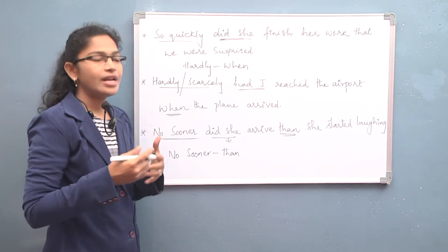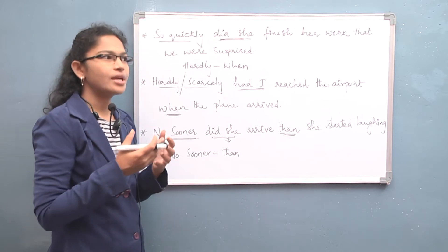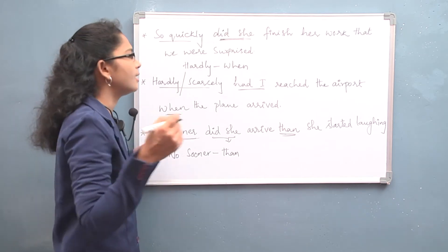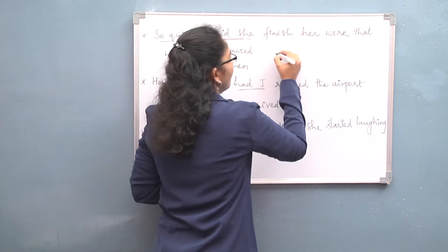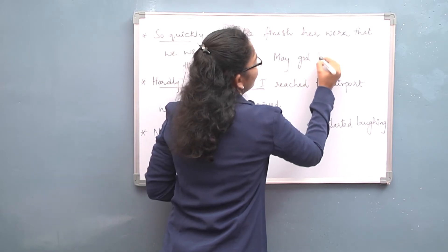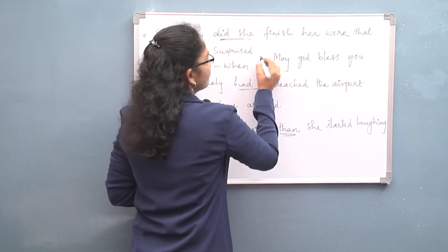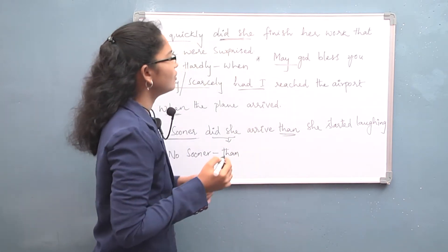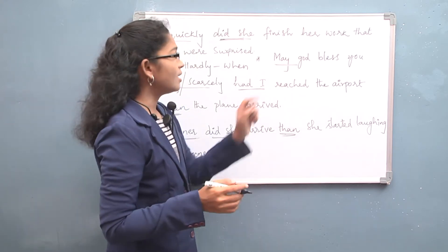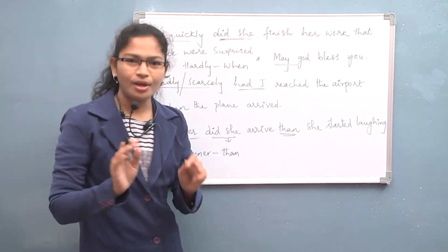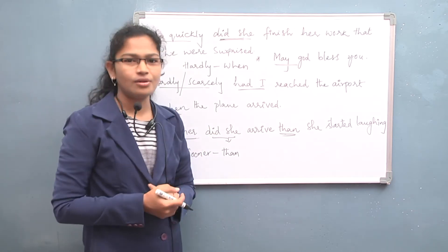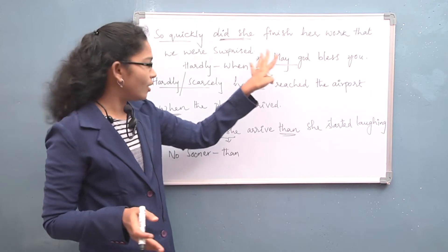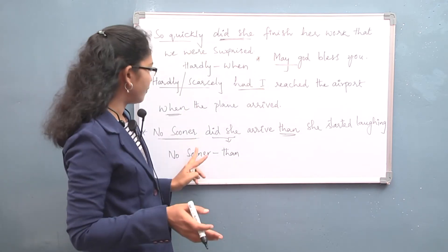In some sentences, when we are expressing a wish or prayer, we also invert the verb. For example: 'May God bless you.' You are not saying 'God may bless you' — you say 'May God bless you.' This is not a question; it is a wish or prayer. To give the proper tone to these sentences, we use this inverted structure.